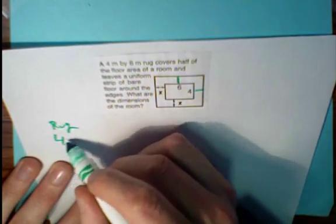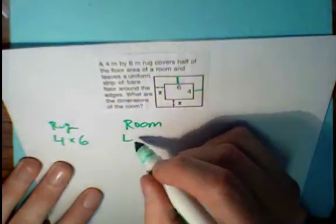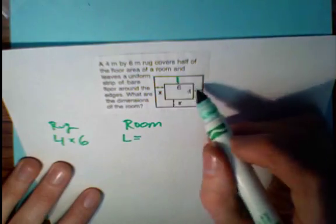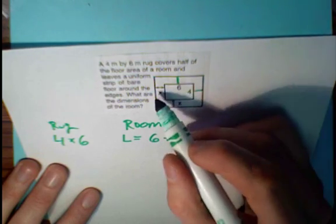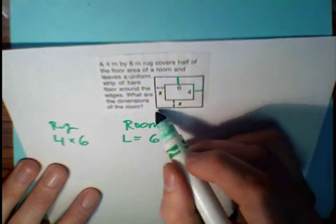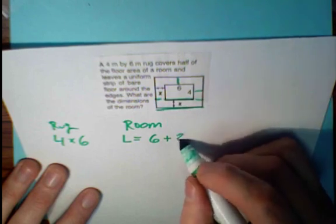We have the rug. The rug is 4 by 6, but the room, the length of the room, if you consider 6 to be the length, the length is 6 plus, we have x over here and x over here. If this is the length, 6 plus 2x.